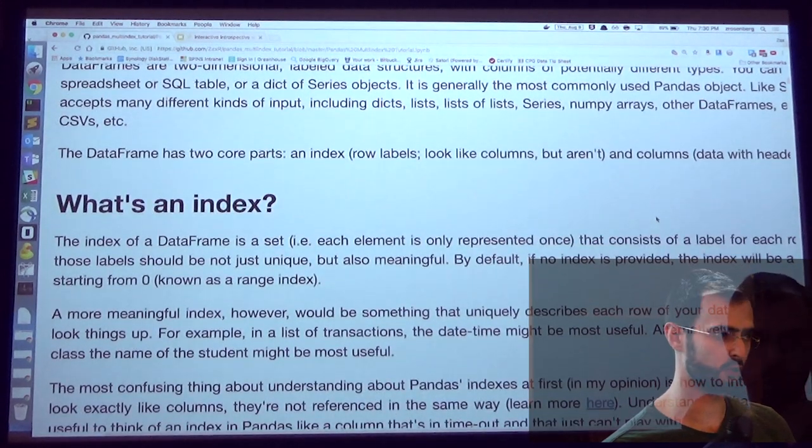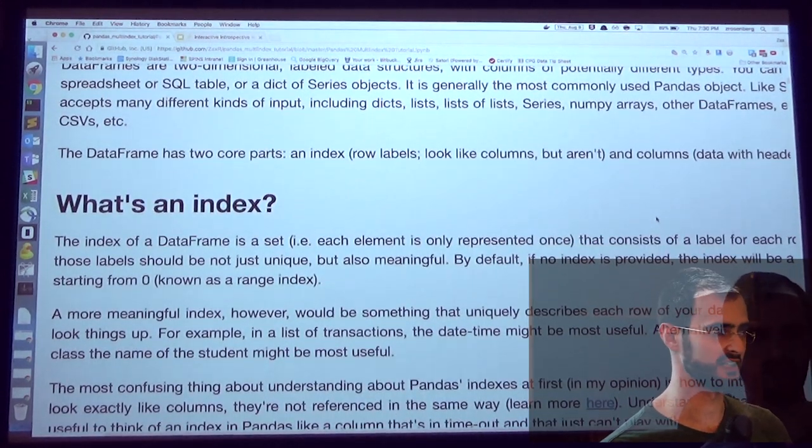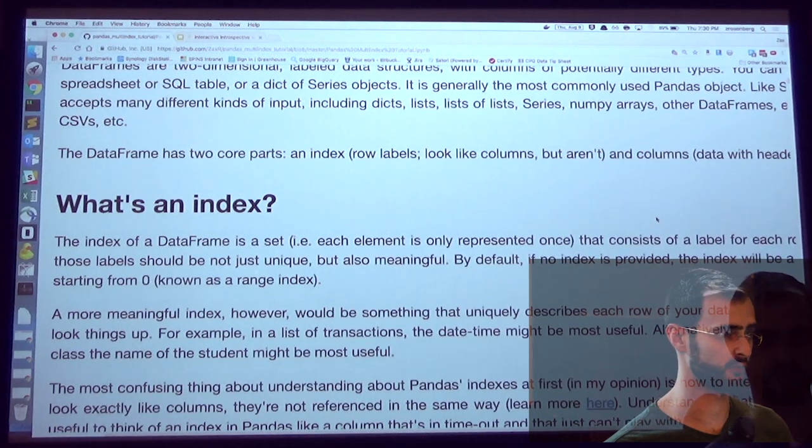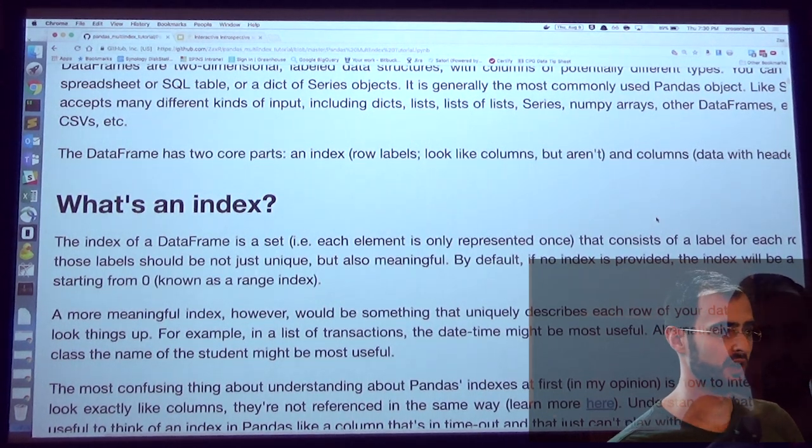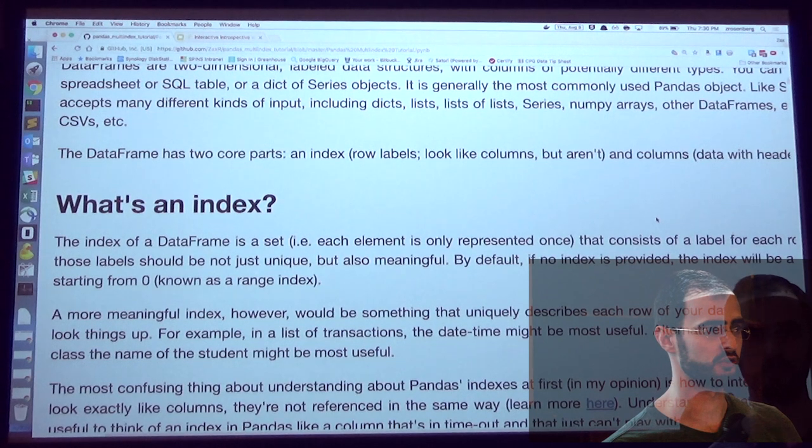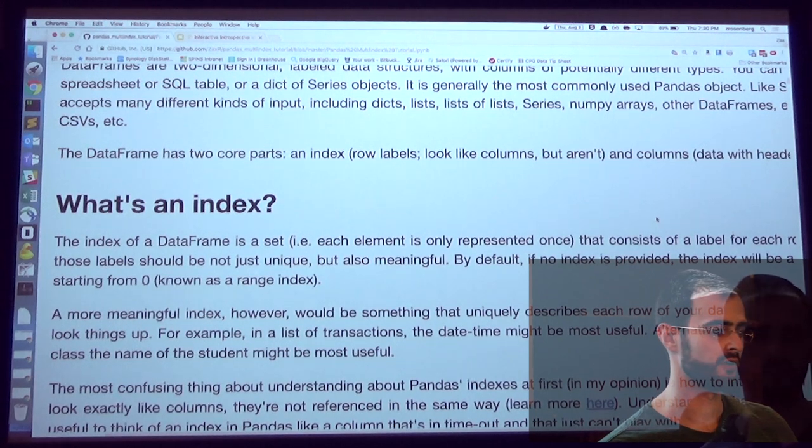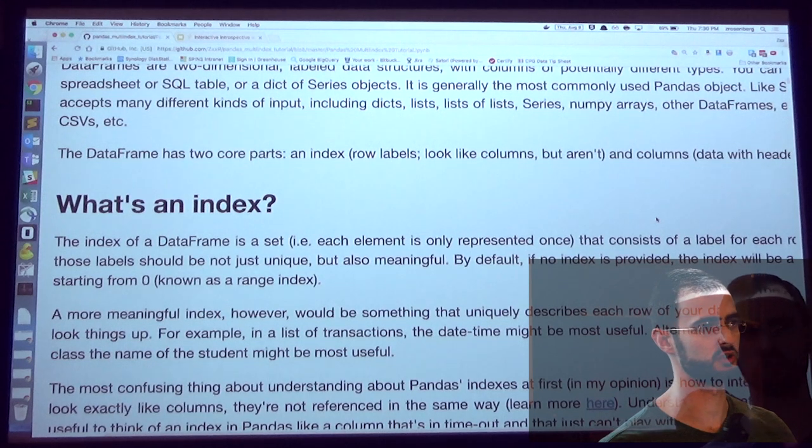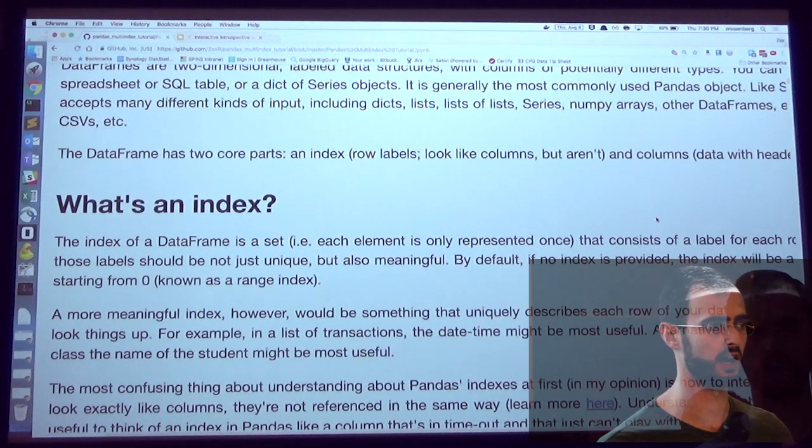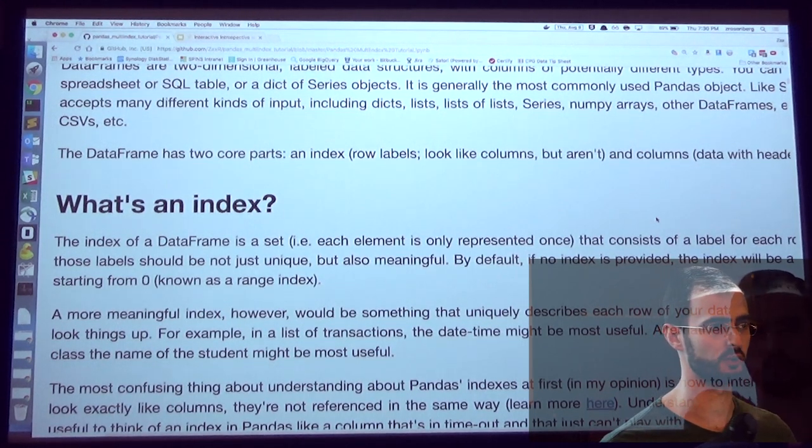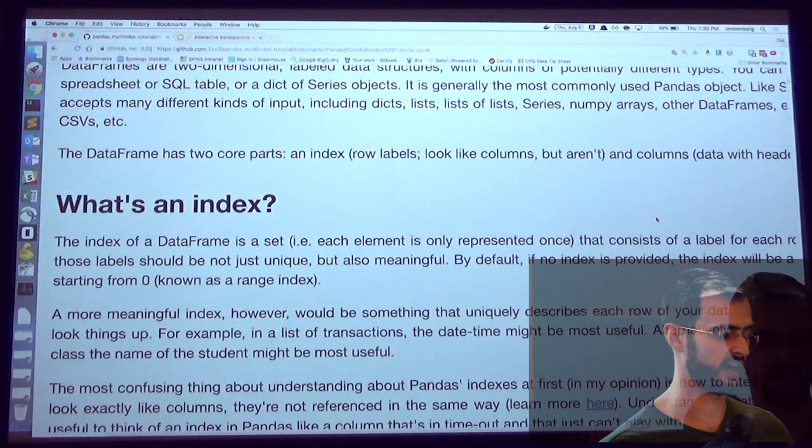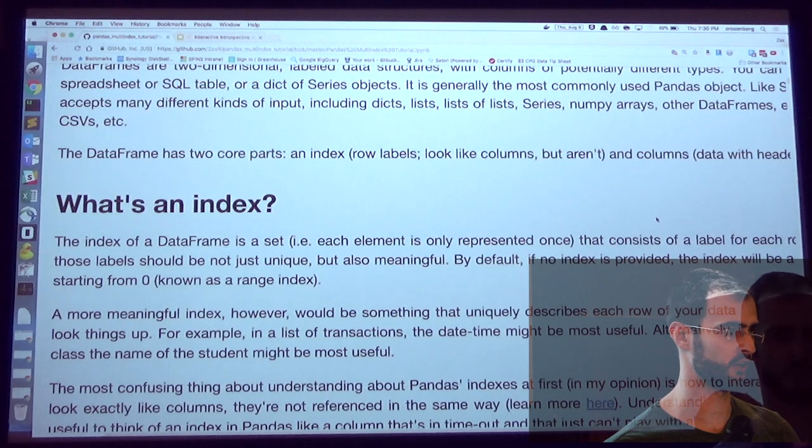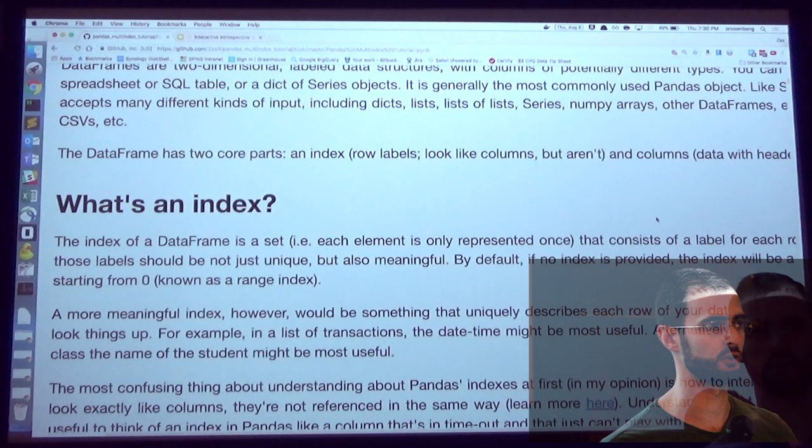And so the real value though of Pandas comes from two data types. It has series and data frames. Series are a way to work with labeled homogeneous one-dimensional arrays. Data frames are basically just a collection of those series, so you can work with multiple columns of potentially heterogeneously typed data in a two-dimensional array. So a data frame is divided into two parts. You have the columns, which you're used to, just like you would see in Excel. And we have indexes, which looks like a column, but it's actually treated totally differently.